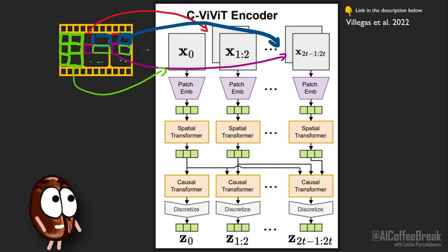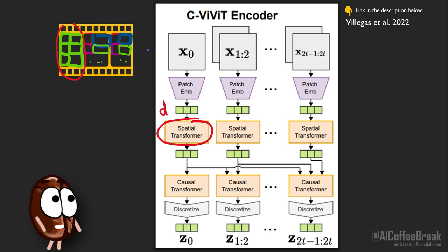The encoder applies a linear transformation of these patches to reduce the dimensionality to D. Transformer layers along the spatial dimensions with all-to-all attention, left to right, combine the information of each patch with information from its neighboring patches in the same frame.